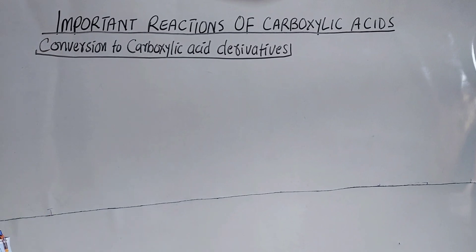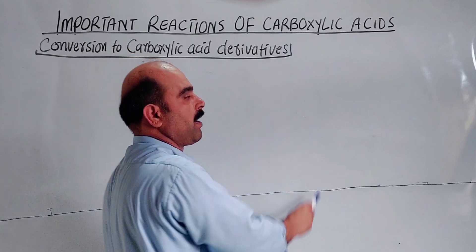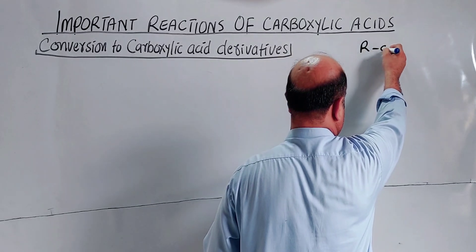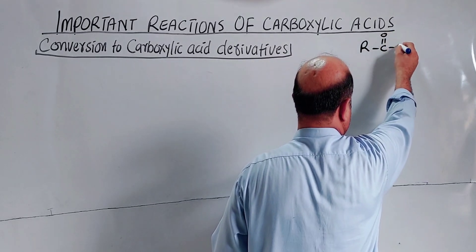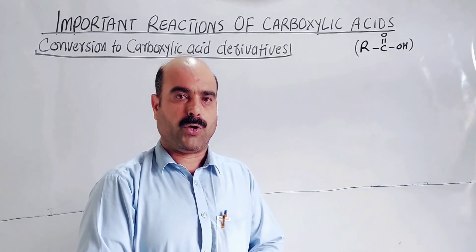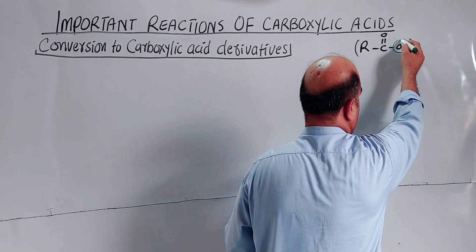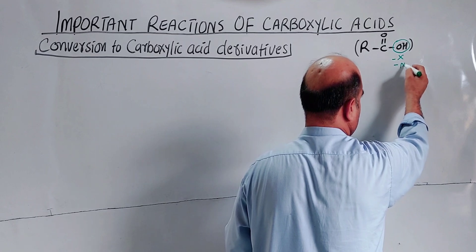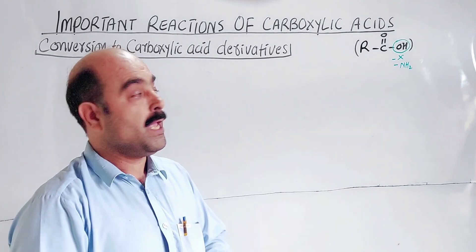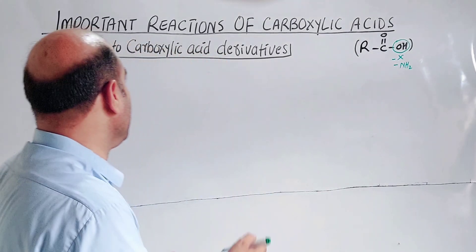Today we have a new topic and that is the important chemical reactions of carboxylic acids. I will discuss these reactions. In nucleophilic substitution reactions, the OH group of the carboxylic acid is replaced by another atom or group of atoms, and a carboxylic acid derivative is obtained.